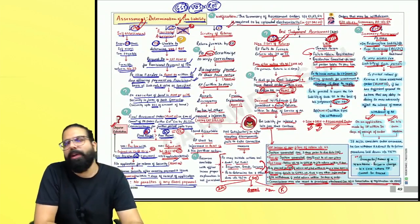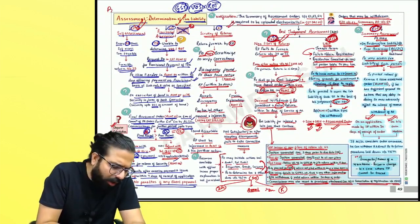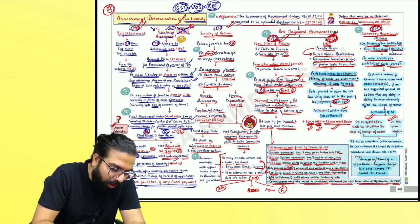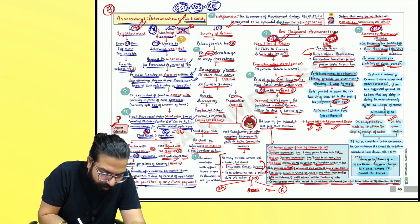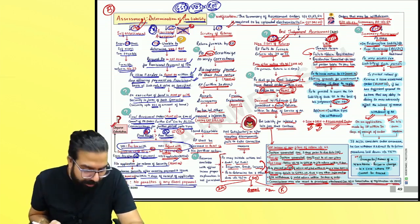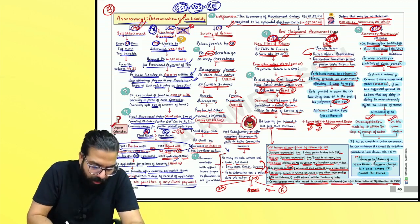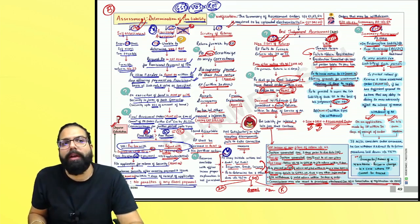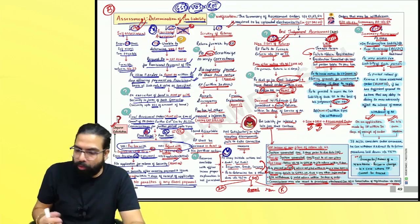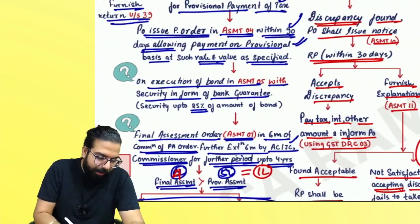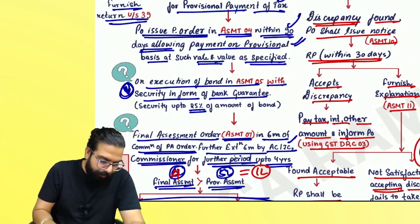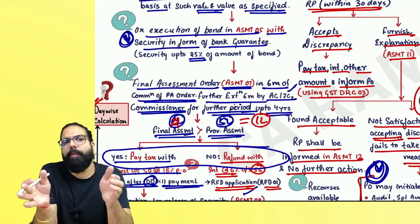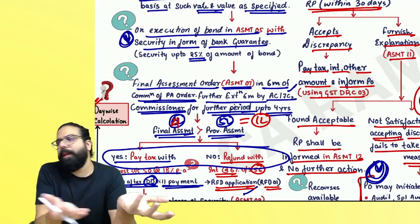This chapter is very important from the exam point of view. You can call it a B-graded chapter, but they do ask questions on provisional assessment — especially calculations. They can ask about scrutiny, what recourses are available with the officer, bank guarantee calculations — for example, the officer told you to give a bond of a certain amount, then what will be the security amount? Security amount is 25% of the bond amount.